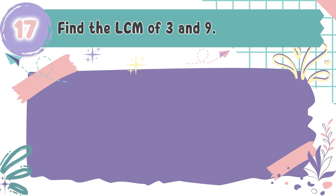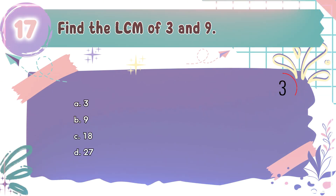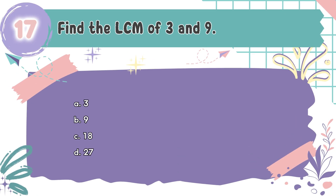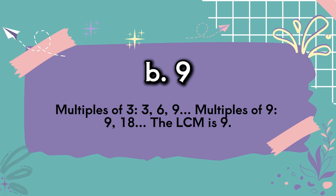Question number 17: Find the LCM of 3 and 9. The choices are A: 3, B: 9, C: 18, D: 27. The correct answer is B, 9. Multiples of 3 are 3, 6, 9, and so on. Multiples of 9 are 9, 18, and so on. The LCM is 9.